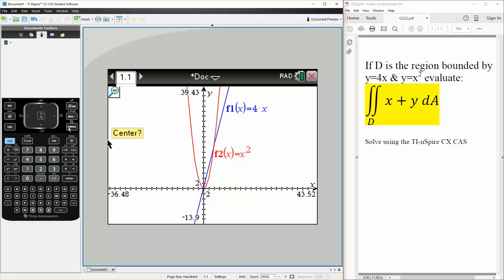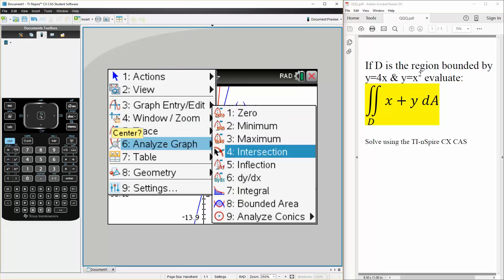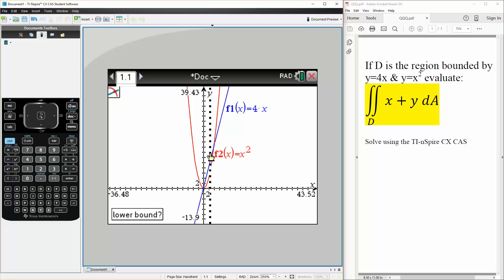So there's an intersection, and we want to know that intersection. So analyze, 4 for intersection. So the intersection is at 4, 16, and our point is 0, 0.